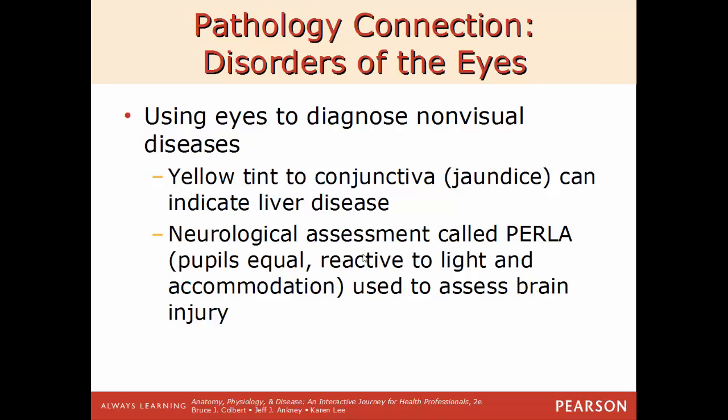Here is a standard color chart with red and green circles. People who are colorblind are not able to see the number embedded in the circles. By using the eyes to diagnose non-visual diseases: jaundice can be diagnosed by looking at the conjunctiva, which becomes yellow, indicating liver disease. Neurological assessments called PERLA — pupils equal, reactive to light and accommodation — are used to assess brain injury. That's why doctors flash a light in your eye; if the pupils aren't responding, there is neurological damage.